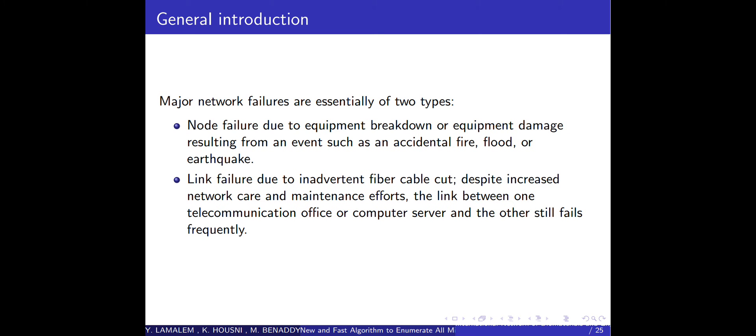Major network failures are essentially of two types: node failure due to equipment breakdown or damage resulting from events such as accidental fire, flood, or earthquake; and link failure due to inadvertent cable cuts. Despite increased network care and maintenance efforts, the link between communication offices or computer servers still fail frequently.